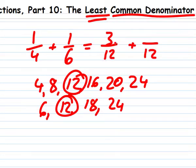One-fourth equals three-twelfths, and one-sixth is two-twelfths. So, one-fourth plus one-sixth equals three-twelfths plus two-twelfths, or five-twelfths.